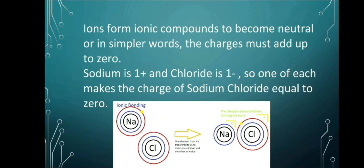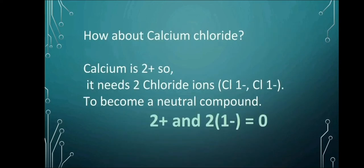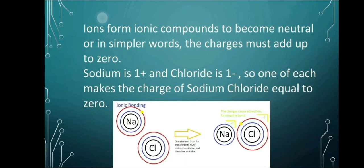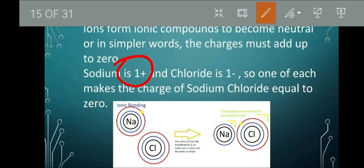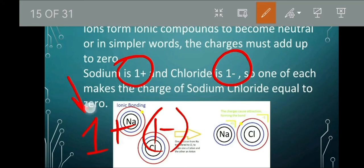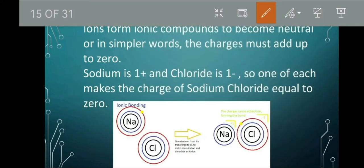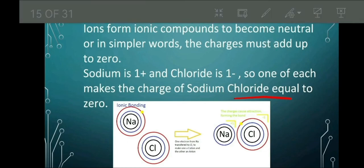Ions form ionic compounds. To become neutral, or in simpler words, the charges must add up to 0. Sodium is 1+, and chloride is 1-. So one of each makes the charge of sodium chloride equal to 0. Sodium is 1+. And then our chloride is negative 1. If you add 1 and negative 1, that equals to 0. Their charges, when added up, has to give us 0.